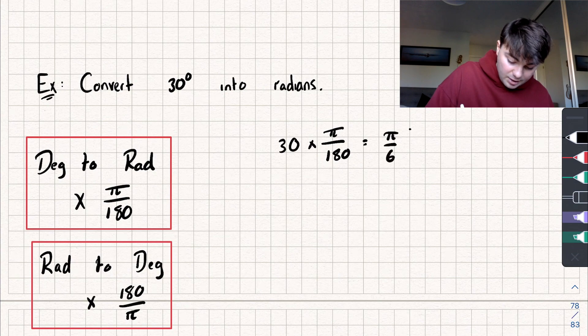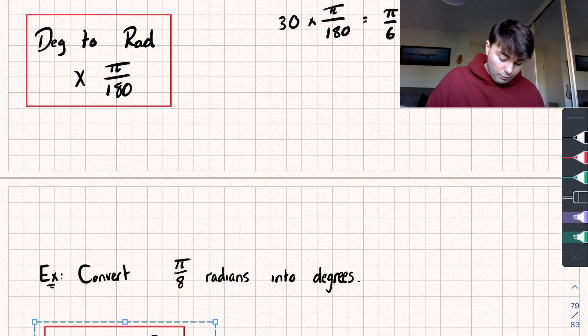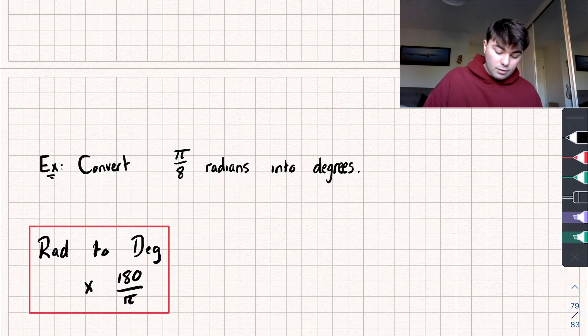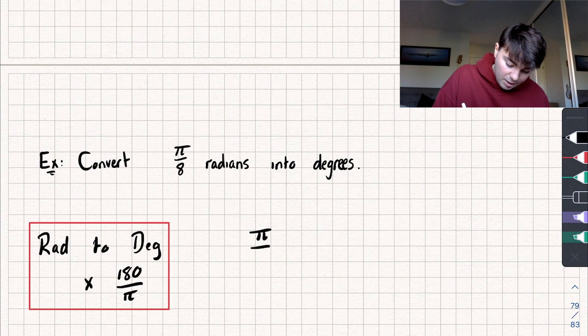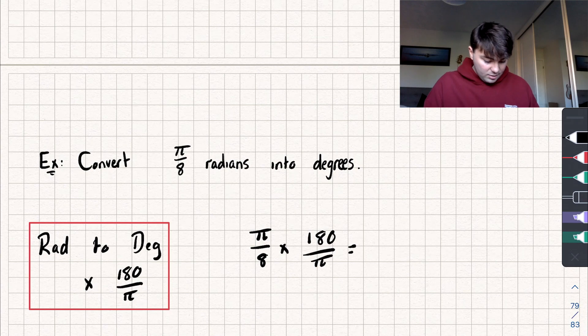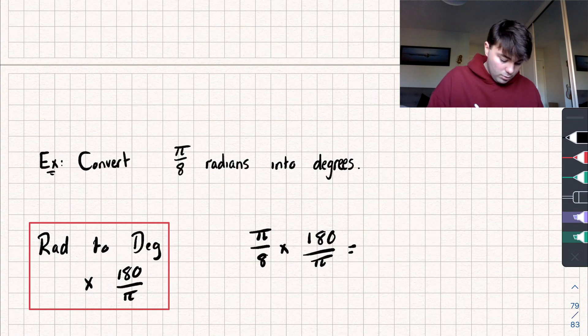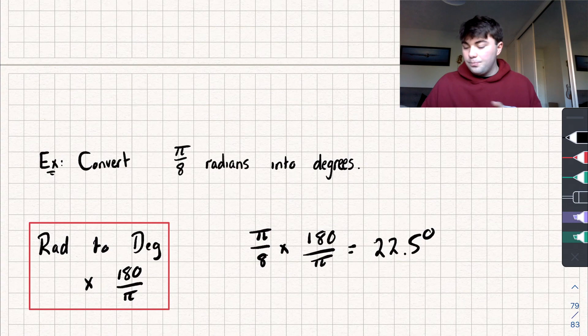Let's now look at another question where we're going to go from radians to degrees, and we want to convert π by 8 radians into degrees. We're going to multiply π by 8 by 180 divided by π, and if we do that we get π by 8 multiplied by 180 divided by π is equal to 22.5 degrees.